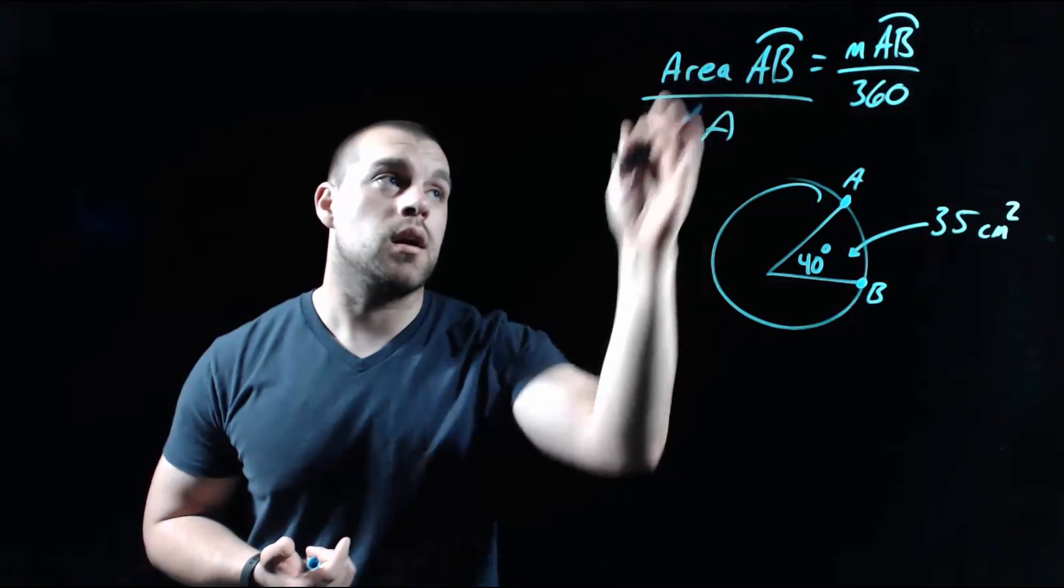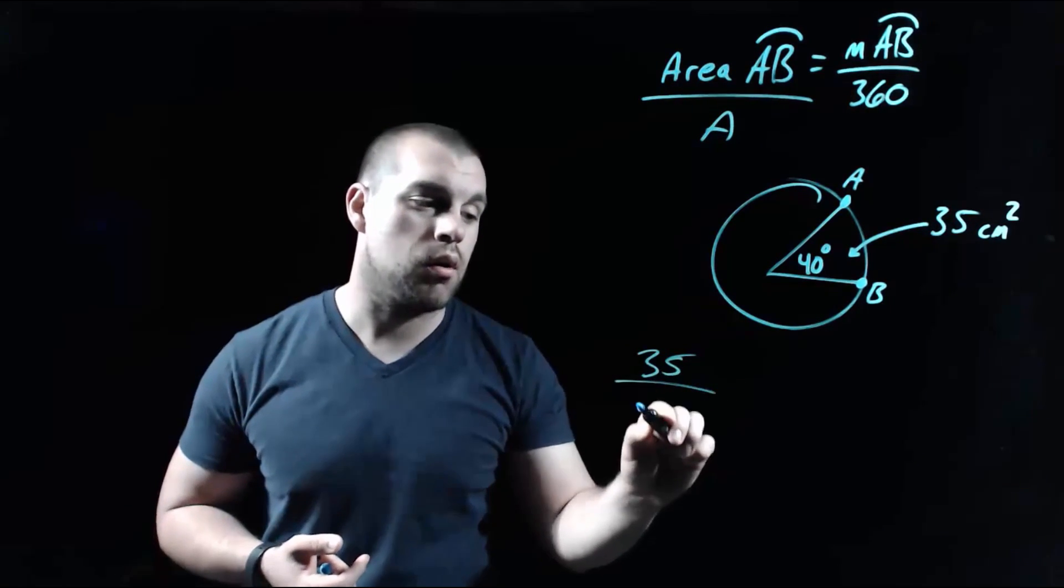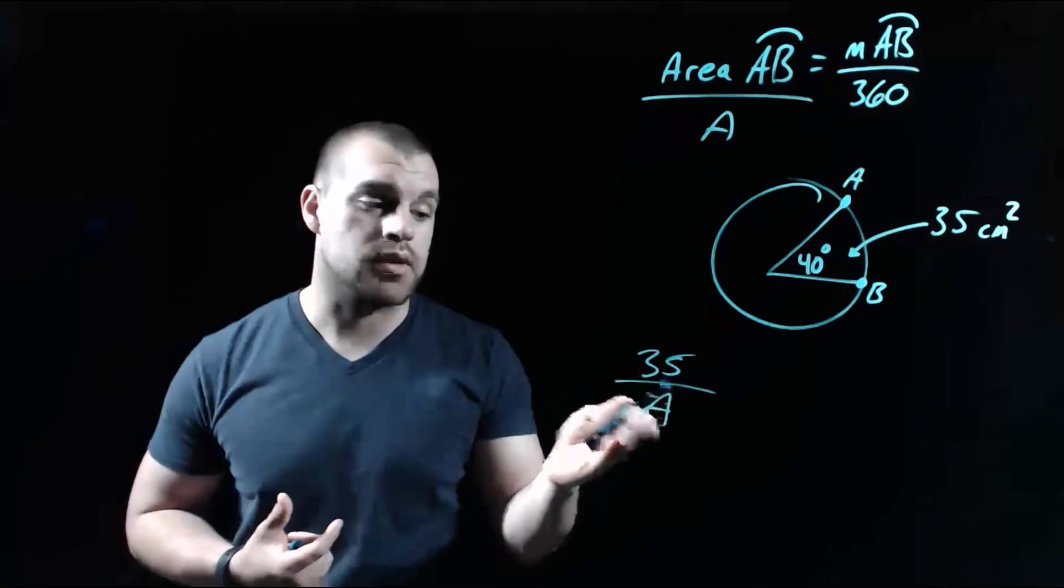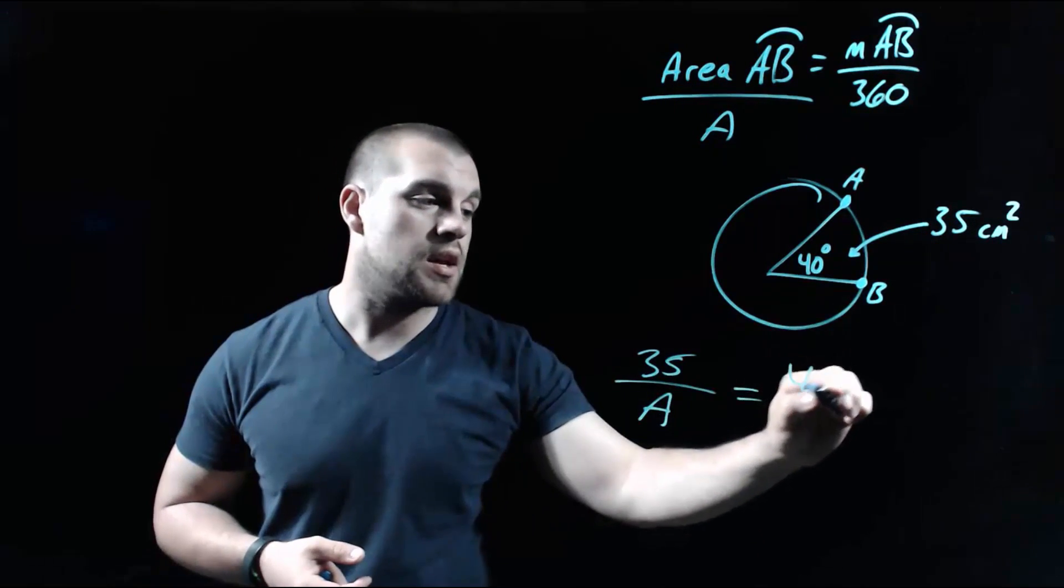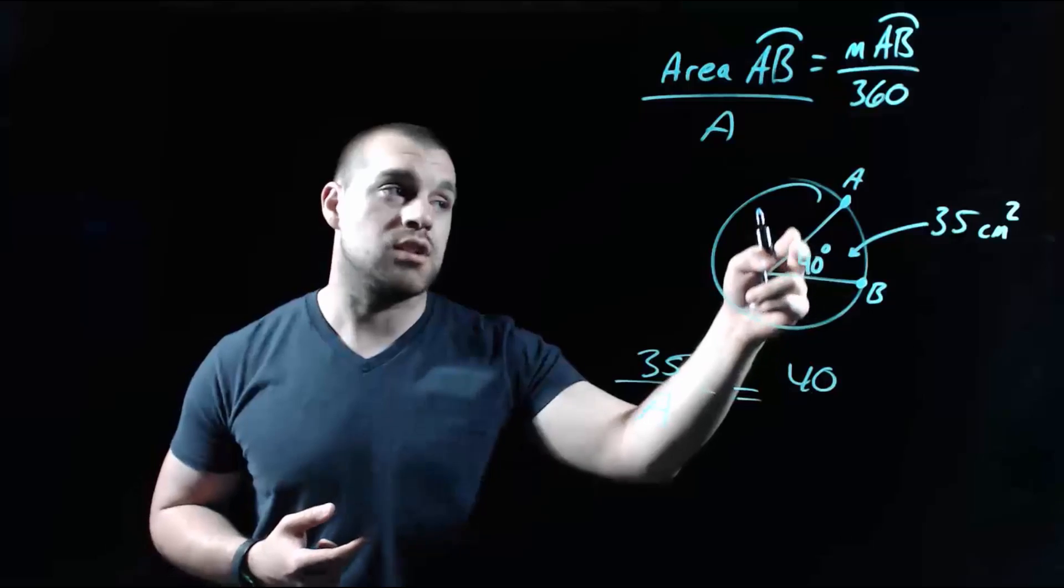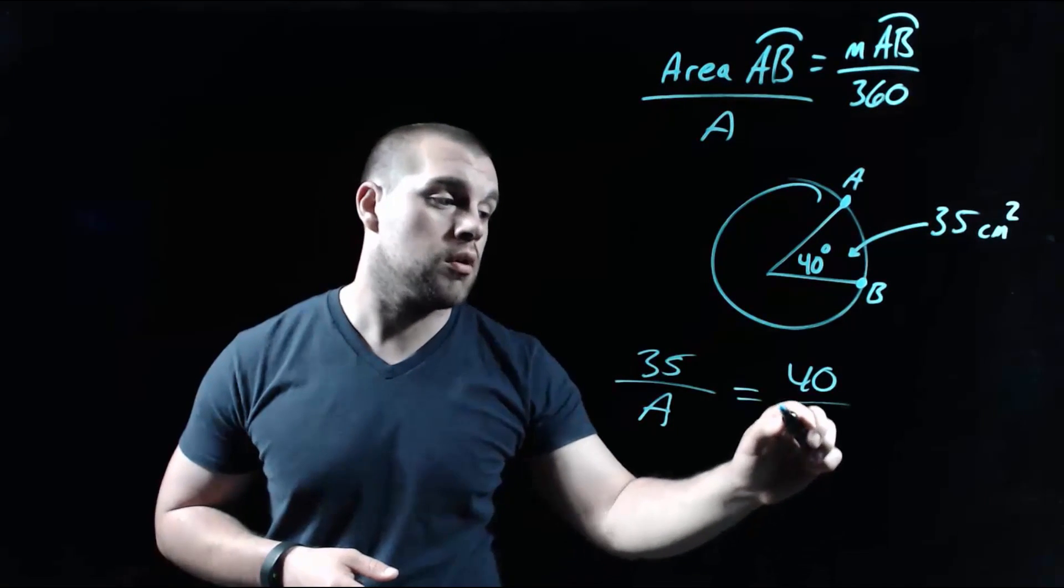So we know that the area of our sector is 35 centimeters squared over, we want to find the area of the entire circle, so that's where our A value is going to go, equals our 40-degree central angle, because the measure of the central angle is the exact same as the measure of the arc that it intercepts, over 360.